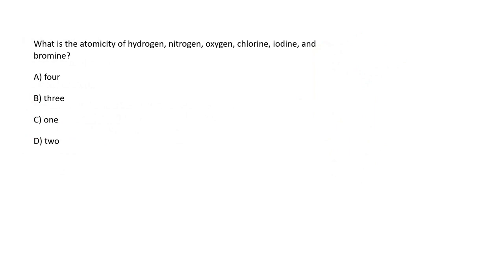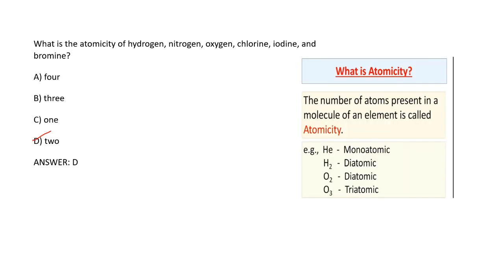Next question: What is the atomicity of hydrogen, nitrogen, oxygen, chlorine, iodine, and bromine? Their atomicity is two. Atomicity means the number of atoms that combine to form a single molecule. Hydrogen requires two hydrogen atoms to form one hydrogen molecule, so hydrogen is diatomic. All these elements require at least two atoms to form a stable molecule. So option D is the right answer.